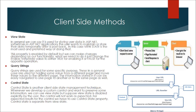View state: In general, it is used for storing user data in ASP.NET. Sometimes in ASP.NET applications, the user wants to maintain or store their data temporarily after a postback. In this case, view state is the most used and preferred way of doing that. This property is enabled by default, but we can make changes depending on our functionality — we just change the enable view state value to either true for enabling it or false for the opposite.